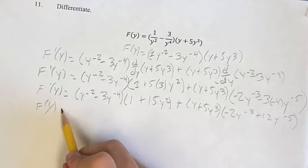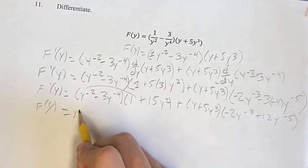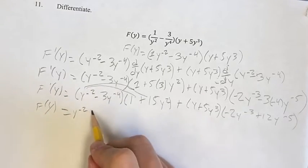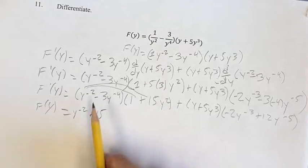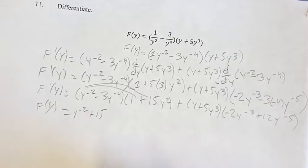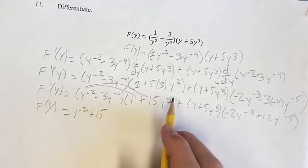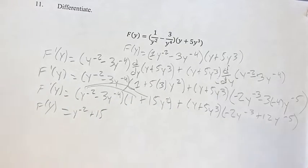Distributing all of these, we get y to the negative 2 plus 15y to the negative 2 times y to the second power. When you're multiplying, you can add the exponents when you have the same basis, so 2 minus 2, which is y to the 0, which is just 1.